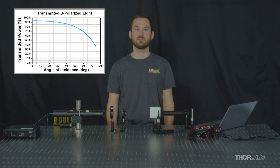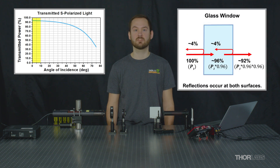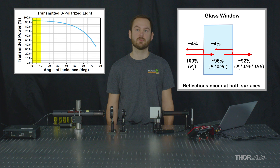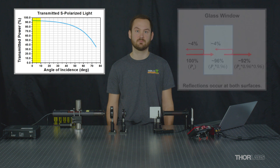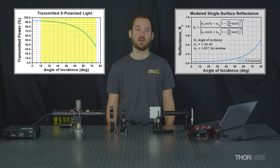Taking a look at our plot of transmitted power for S polarization normalized by our baseline, we can see that the power remains roughly the same for low angles of incidence. This means that the 4% reflection rule of thumb holds for angles of incidence between approximately 0 and 10 degrees, resulting in a 92% transmission. For angles of incidence larger than 10 degrees, the power decreases exponentially, which is expected based on the Fresnel reflection plots.